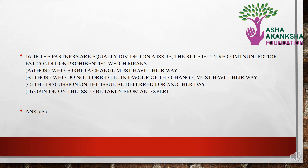If partners are equally divided on an issue, the rule is 'In re com chenei' (condition prohibitus), which means — (a) those who forbid a change must have their way, (b) those in favour of the change must have their way, (c) the discussion on the issue be deferred for another day, or (d) opinion on the issue be taken from an expert. The correct answer is option A — the maxim means that those who forbid a change must have their way.